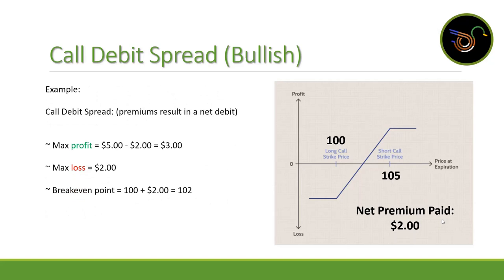Looking at an example: if we have a long call strike price of $100 and a short call strike price of $105, and we paid $2 to open the trade — our max profit is $105 minus $100 equals $5, minus the $2 premium, giving us $3. Max loss is the $2 premium paid. The breakeven point is $100 plus $2, which equals $102.